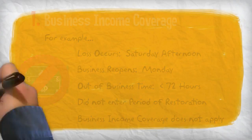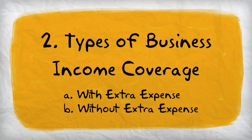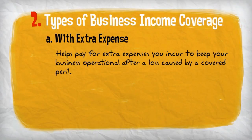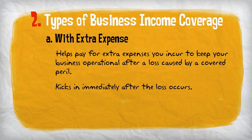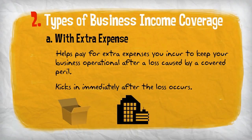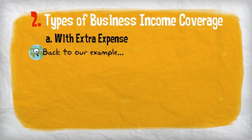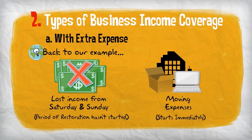There are two types of business income coverage: with extra expense and without extra expense. Business income with extra expense coverage helps pay for extra expenses you incur to keep your business operational after a loss caused by a covered peril. This coverage kicks in immediately after the loss occurs and can cover expenses such as moving costs, renting temporary premises, and renting or purchasing temporary equipment that does not replace equipment already part of your inventory. So in our fire example, while you would not recover the lost income from Saturday and Sunday, you would be reimbursed for the moving expenses because they will allow you to be operational while you rebuild your business.